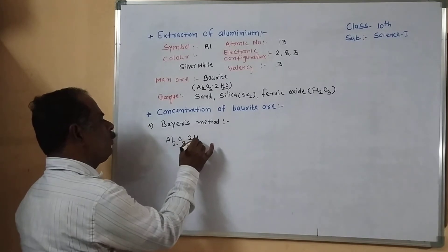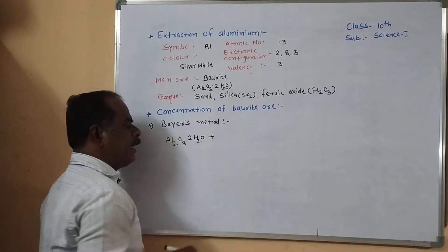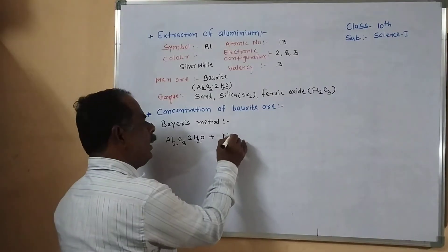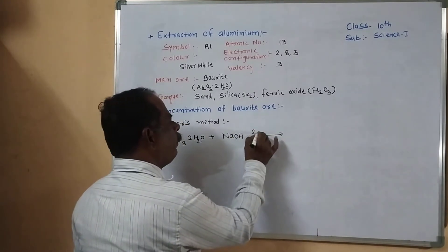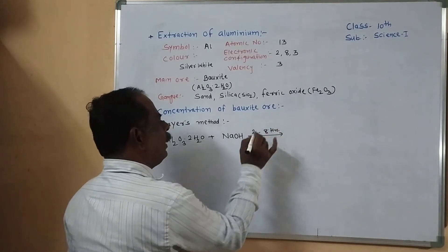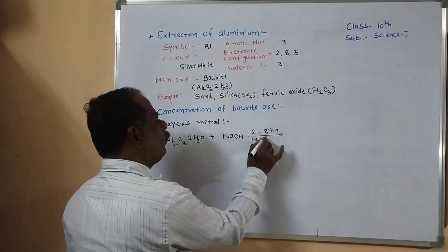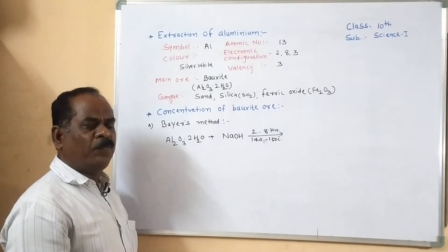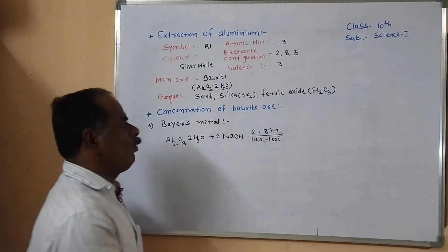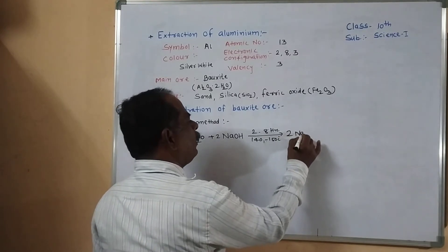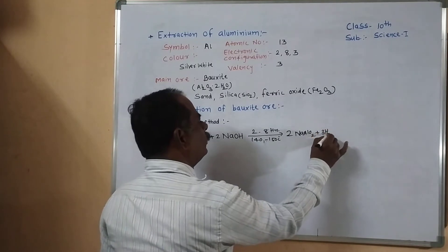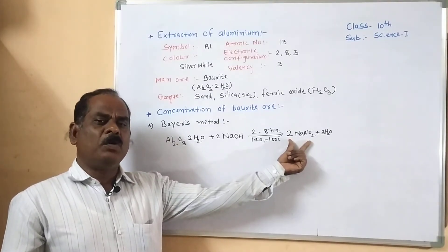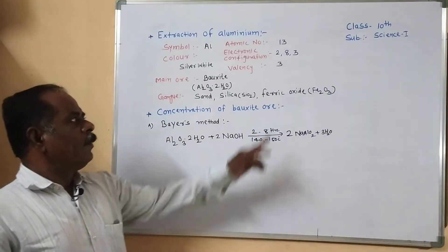The formula of bauxite is Al₂O₃·2H₂O. This bauxite powder is taken in a digester and leached with a sodium hydroxide solution for 2 to 8 hours under pressure, heated at about 140 to 150 degrees centigrade. Since aluminum is an amphoteric metal, it easily reacts with sodium hydroxide to form sodium aluminate NaAlO₂ plus H₂O. Water-soluble sodium silicate is also formed.